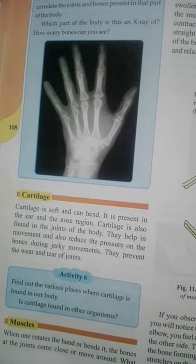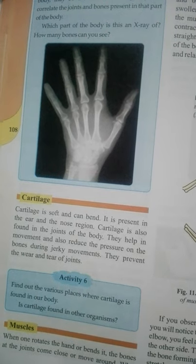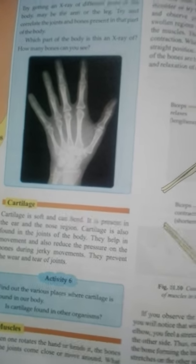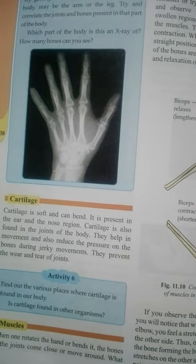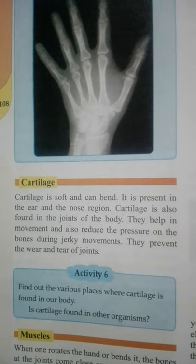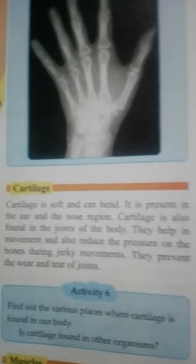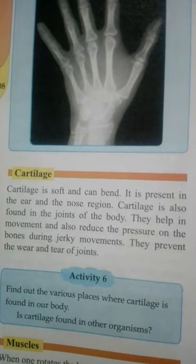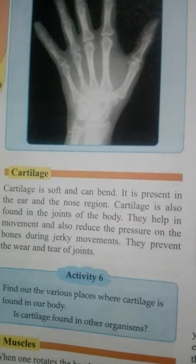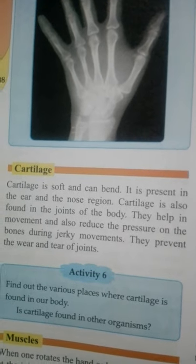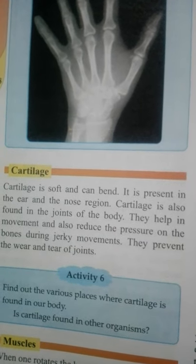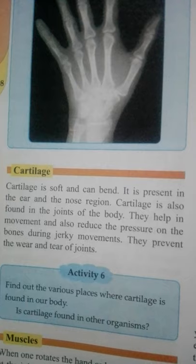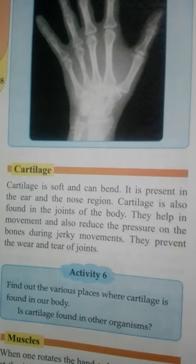Cartilage is present in your ear. When you touch your ear, you can feel it is a soft bone — this bone is the cartilage. It is also present in your nose region. When you touch your nose, you can see that it can be bent, and this is a soft bone.